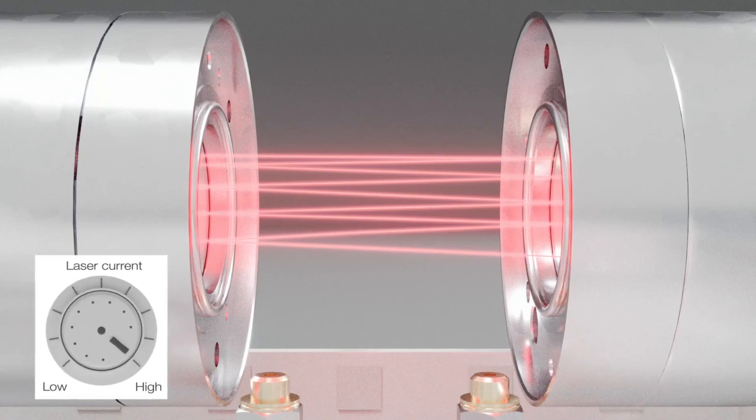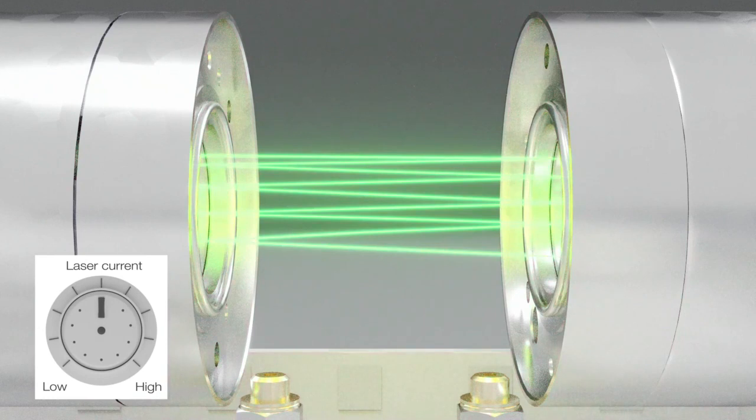The laser beam is tunable in a range of a few nanometers by varying the laser current or temperature. For this reason, depending on the spectrum, up to three gases can be measured with only one laser diode.